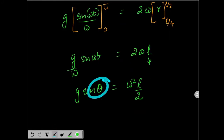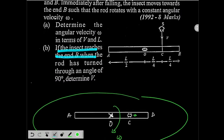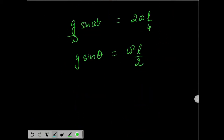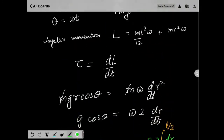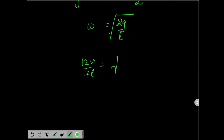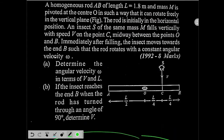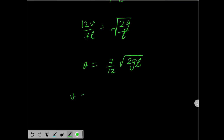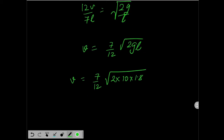According to the question, the insect reaches end B when theta equals 90 degrees. So g·sin(90°) = ω²·(L/2), giving ω² = 2g/L, or ω = √(2g/L). Since from Part A, ω = 12V/7L, we get 12V/7L = √(2g/L), so V = (7/12)·√(2gL). Substituting L = 1.8 m and g = 10 m/s²: V = (7/12)·√(36) = (7/12)·6 = 3.5 m/s.